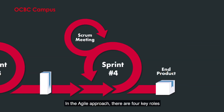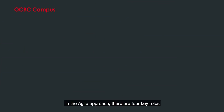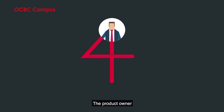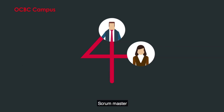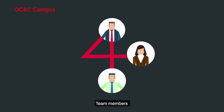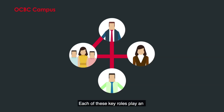In the Agile approach, there are four key roles: the Product Owner, Scrum Master, Team Members, and the User. Each of these key roles plays an important part in the Agile workflow.